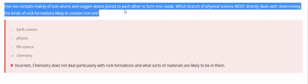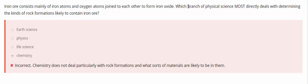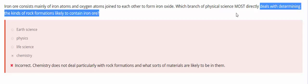This was chemistry explaining to us what iron ore is. But what the question is asking is which branch of physical science deals with determining the kind of rock formations?